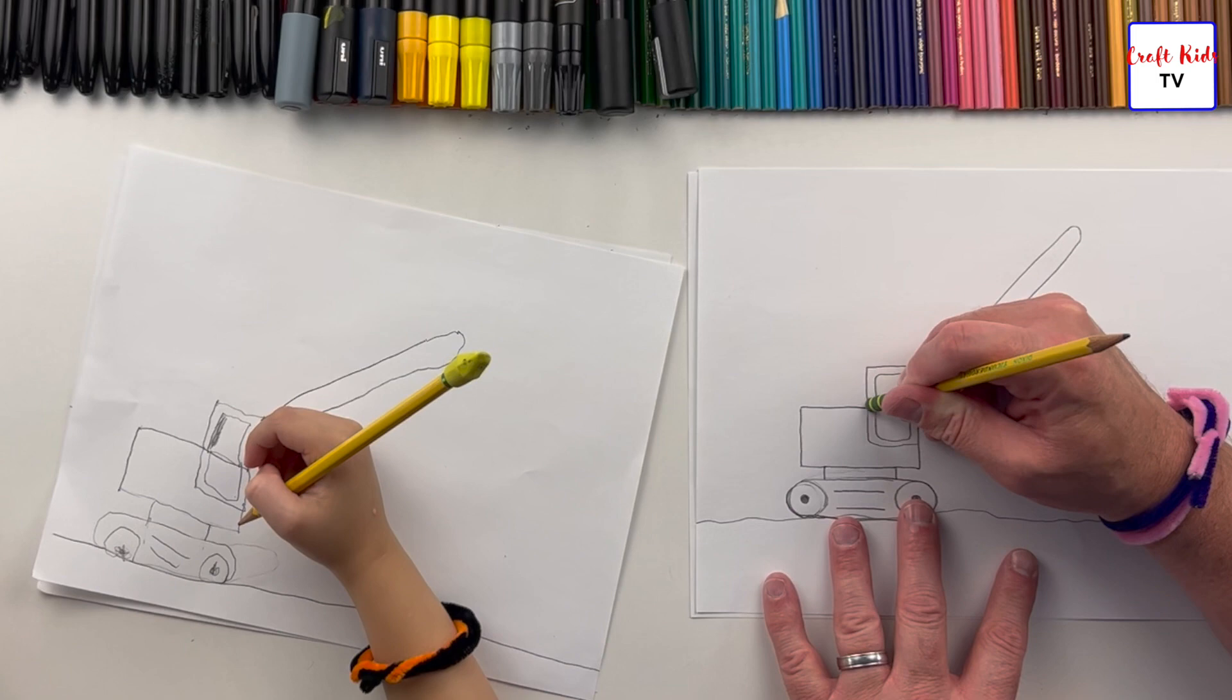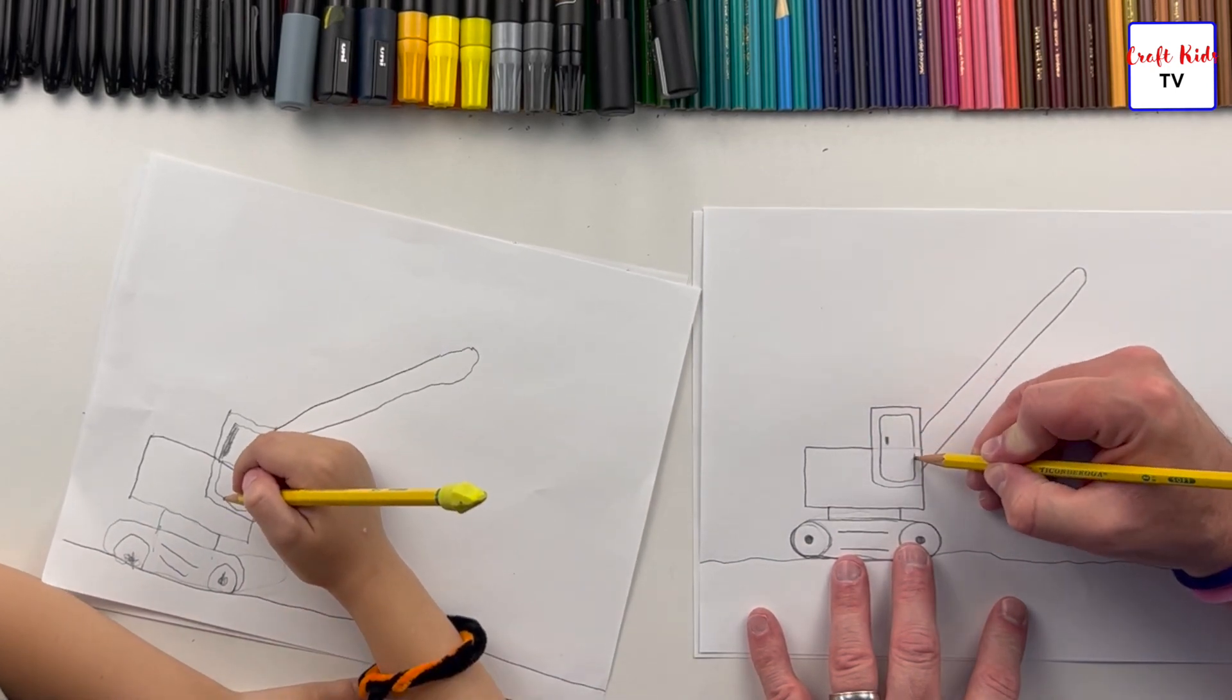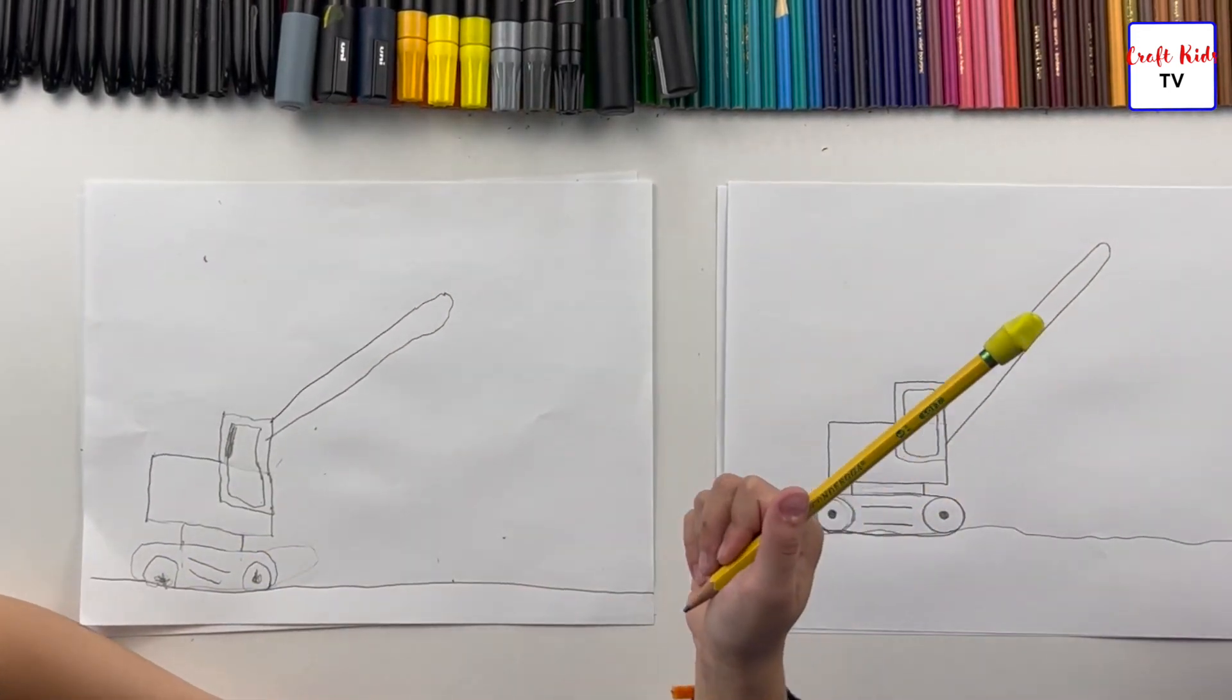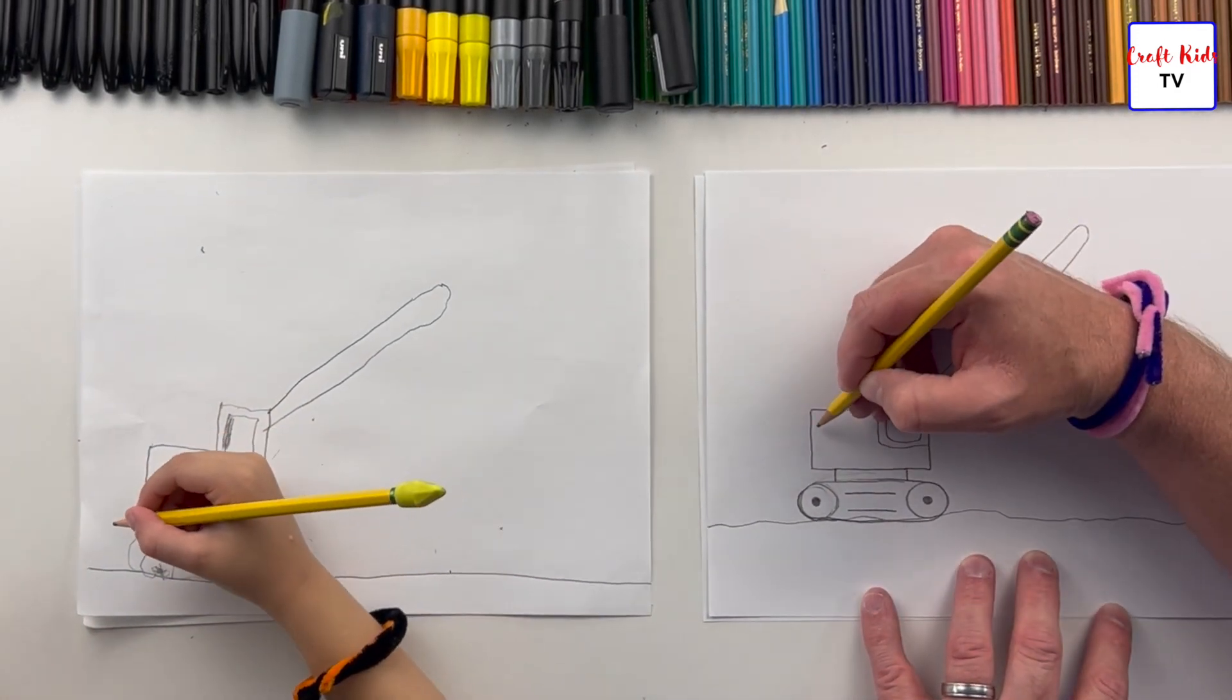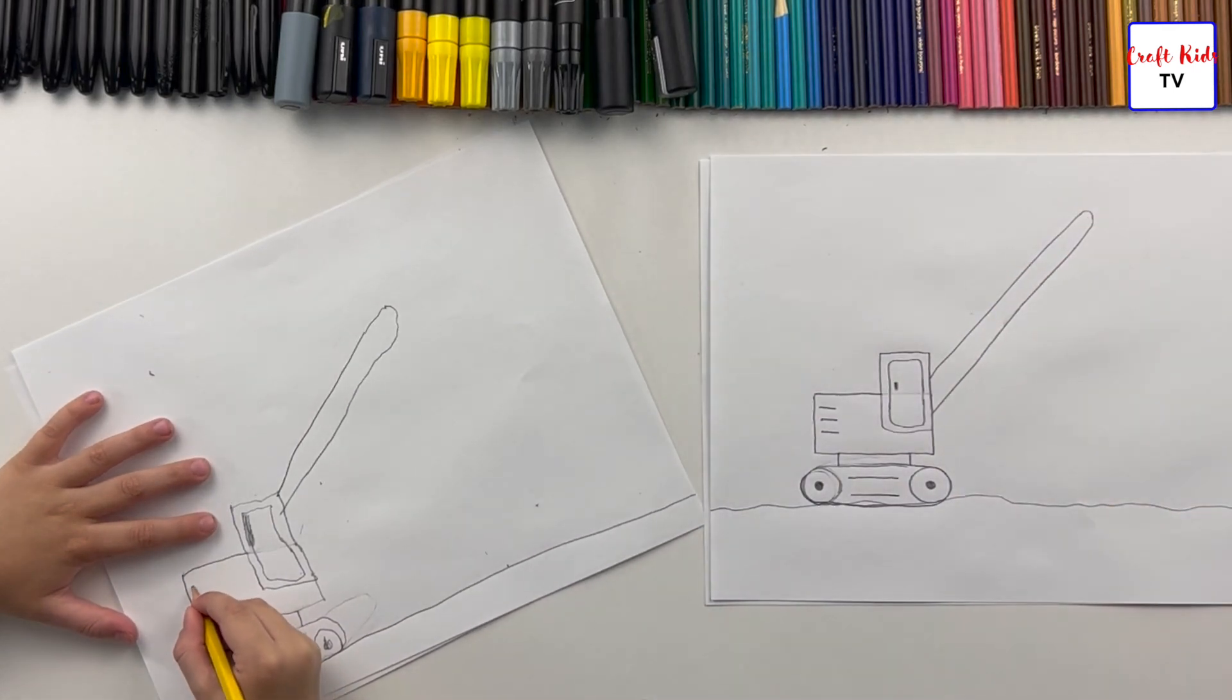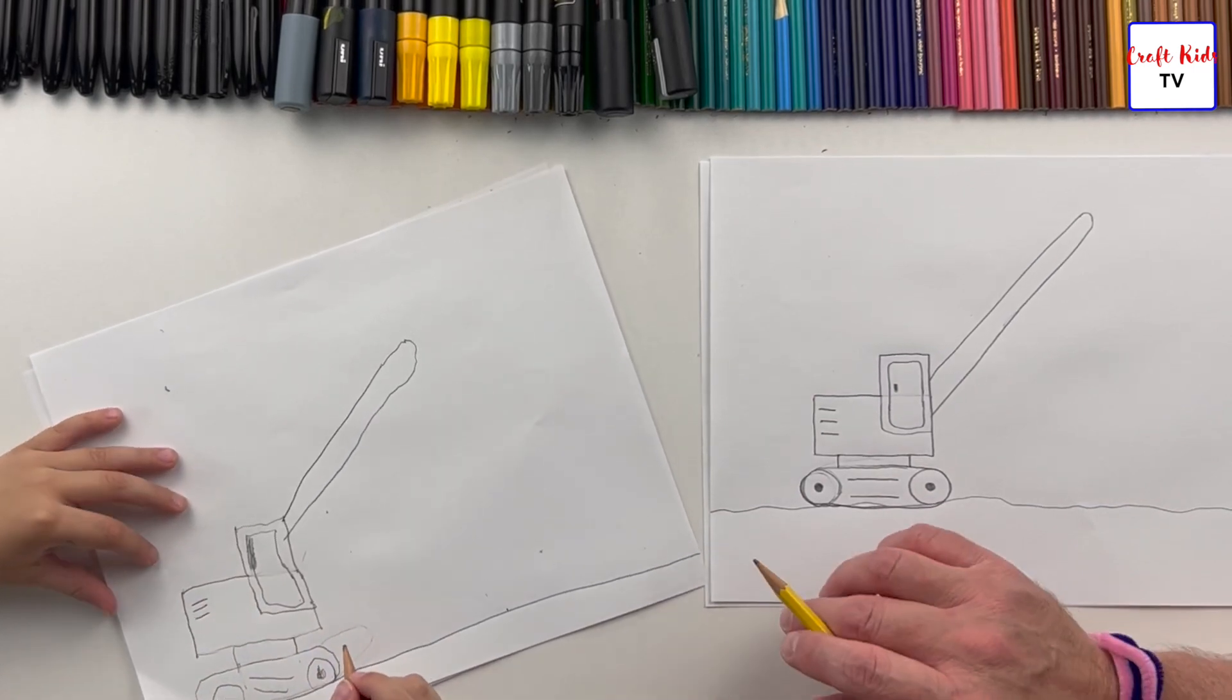And then I'm going to erase this line because it doesn't belong there. This line doesn't need to cut through the door, so I'm just going to erase it and then fill it back in. Now we have an excavator without a line. We have a couple things left to do before we go over this. One of them is we'll do our detail lines here—one, two, three lines. That's like vent lines for the engine.